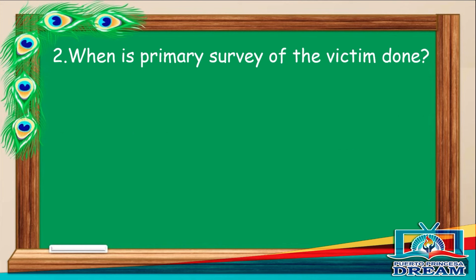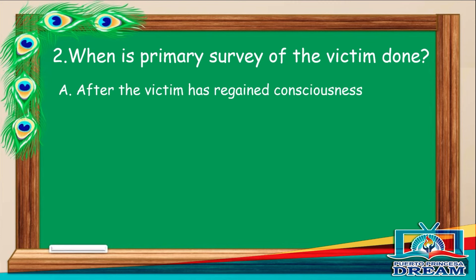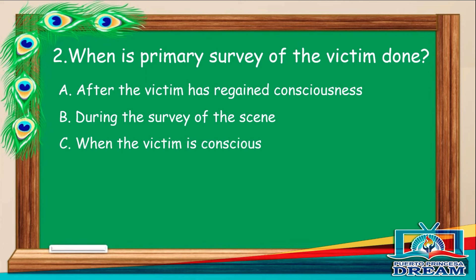When is primary survey of the victim done? A. After the victim has regained consciousness. B. During the survey of the scene. C. When the victim is conscious. D. When the victim is unconscious.